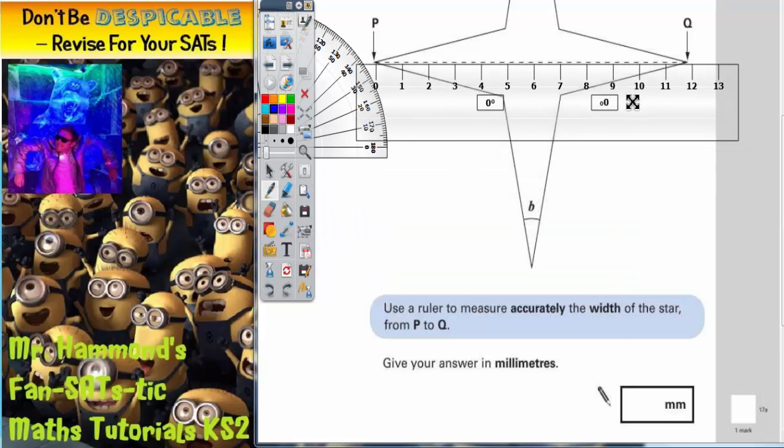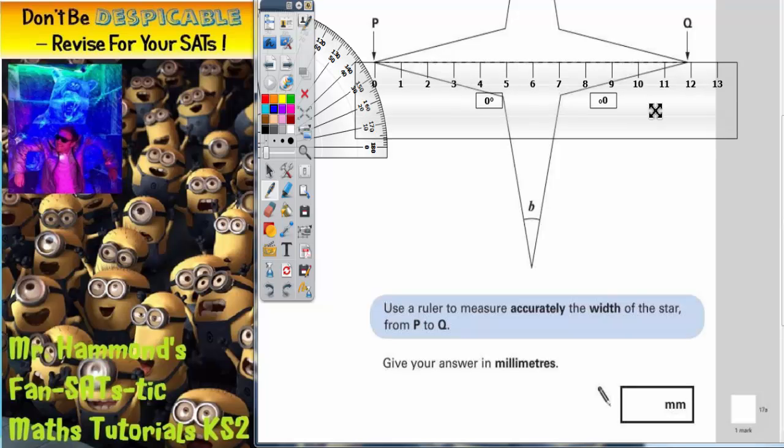If we put our ruler on there, you must try and get the zero lined up exactly with the P. Now you can see it's a little bit less than 12 centimeters. It doesn't quite reach 12 centimeters.